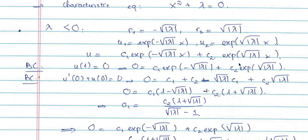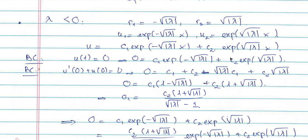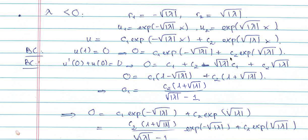The solution u will be a linear combination of u1 and u2, so you want to find c1 and c2 such that u = c1*u1 + c2*u2. You find c1 and c2 by using the boundary conditions. The first boundary condition is u(1) = 0.